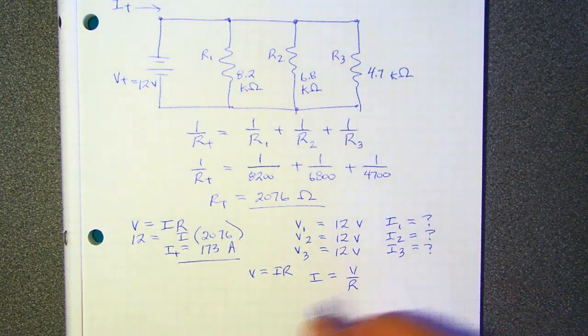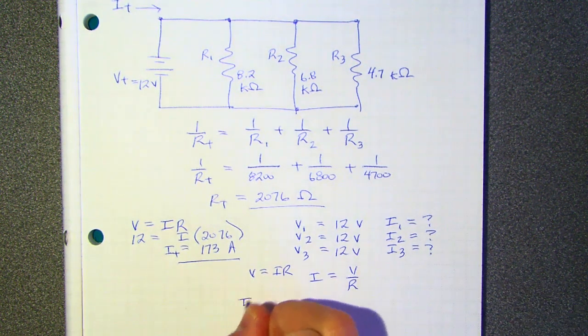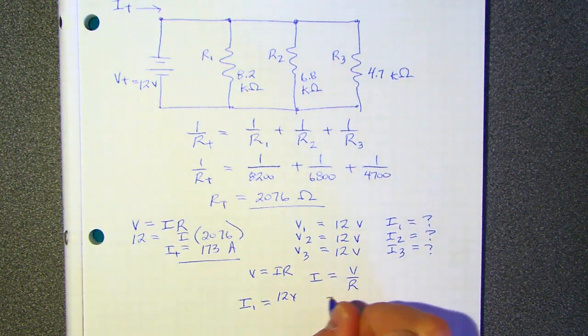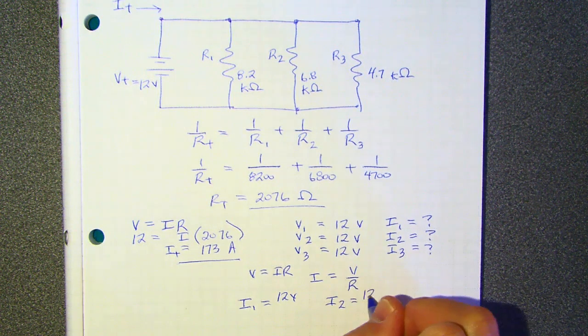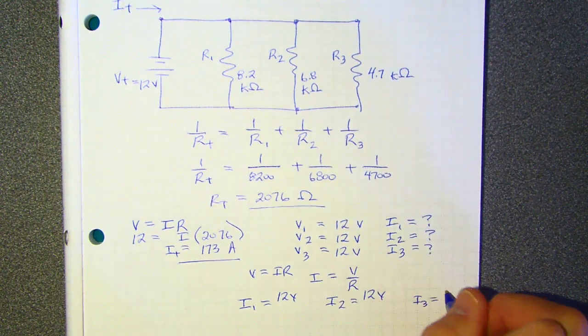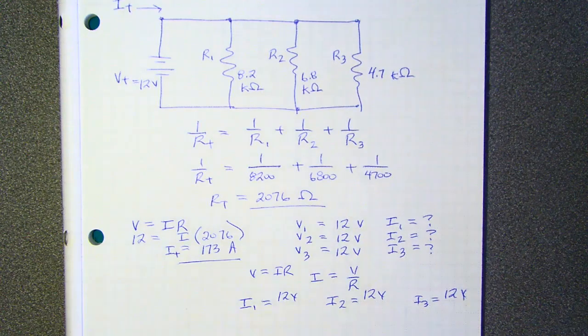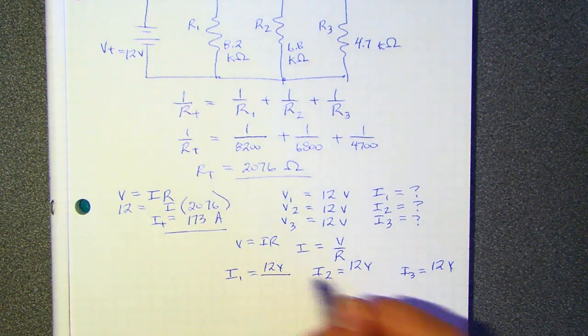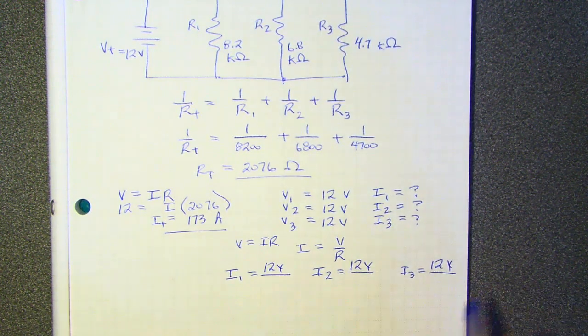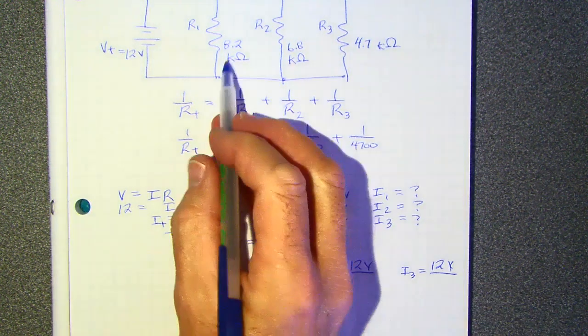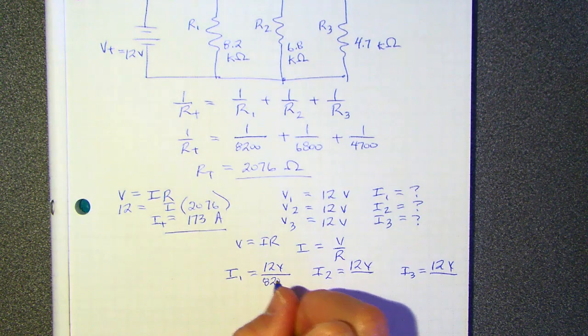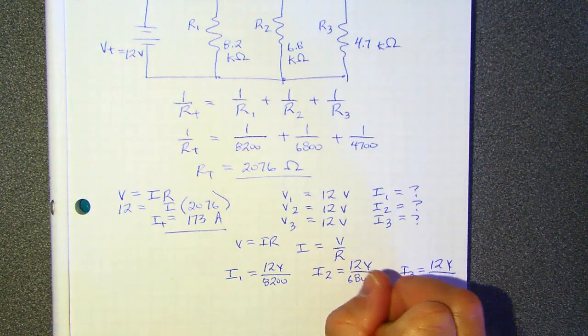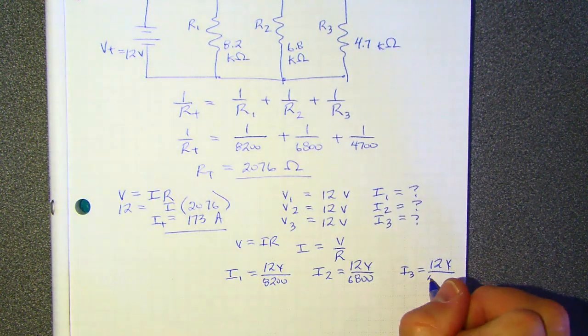Okay, and then so for I sub one, it's going to be 12 volts. For I sub two, it's going to be 12 volts. For I sub three, it's going to be 12 volts. It's the same for all three. What's different now is the resistance. Well, what is the resistance for number one? 8,200. And the resistance for number two is 6,800. And the resistance for number three is 4,700.